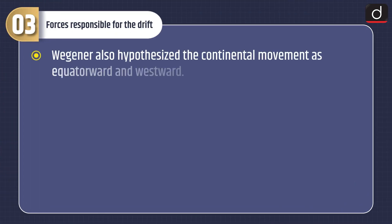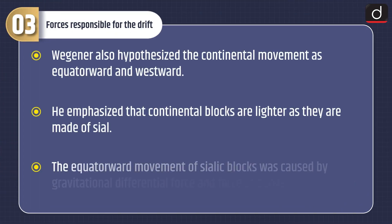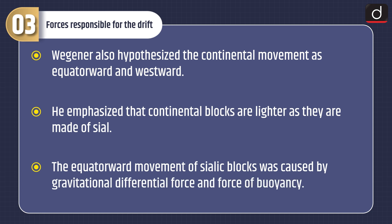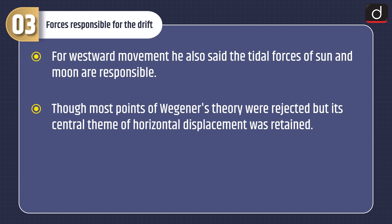Wegener also hypothesized the continental movement as equatorward and westward. He emphasized that continental blocks are lighter as they are made of sial. The equatorward movement of sialic blocks was caused by gravitational differential force and force of buoyancy. For westward movement, he also said the tidal forces of the sun and moon are responsible. Though most points of Wegener's theory were rejected, its central theme of horizontal displacement was retained.